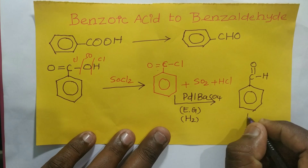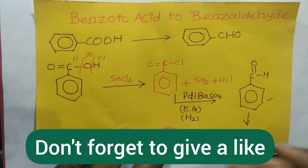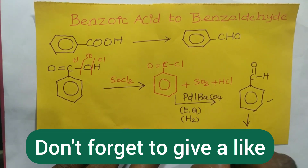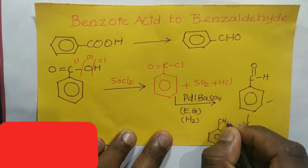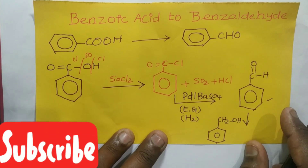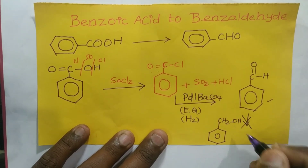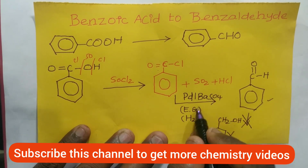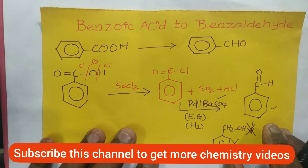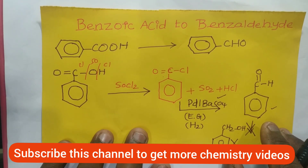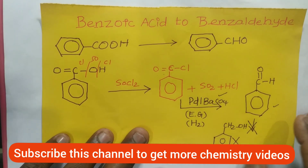Barium sulfate acts as a poison to stop the reaction at benzaldehyde. If I do not use barium sulfate, I would get a further reduced product — benzoyl alcohol (CH₂OH). To avoid this over-reduction, barium sulfate must be used as a poison. Thank you for watching; please share this with others and subscribe to the channel.